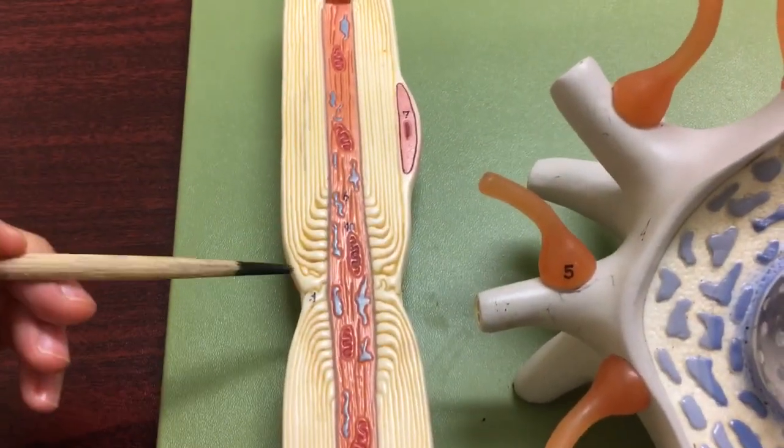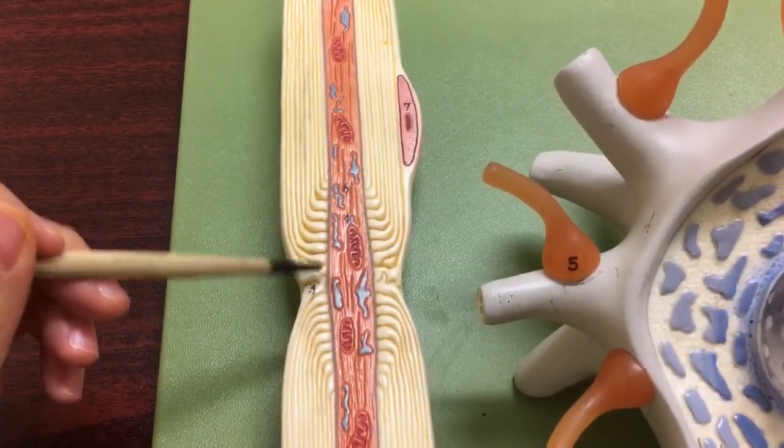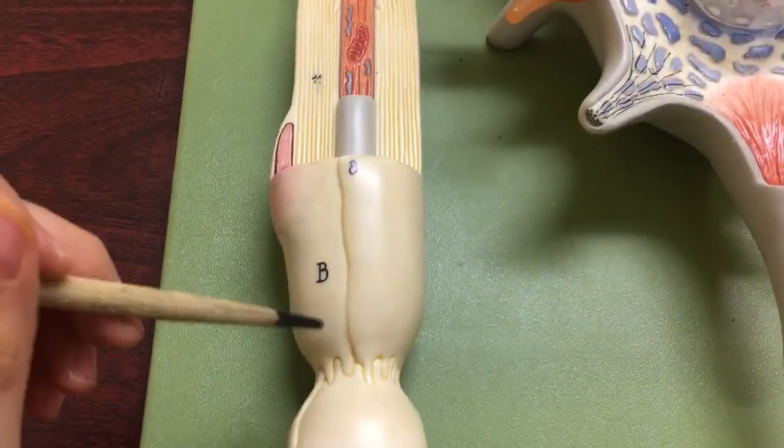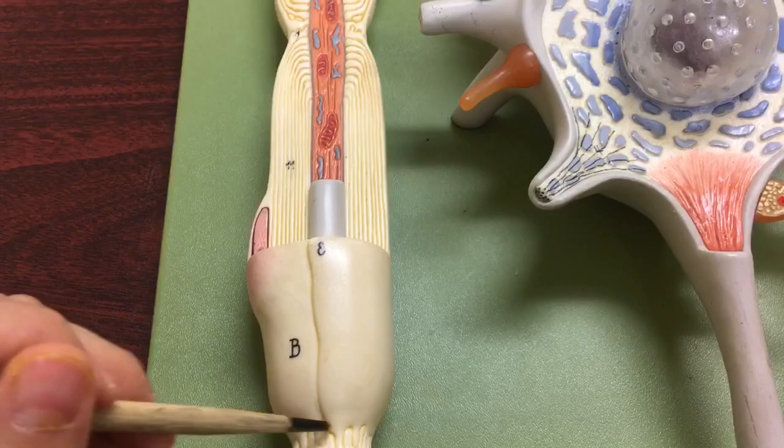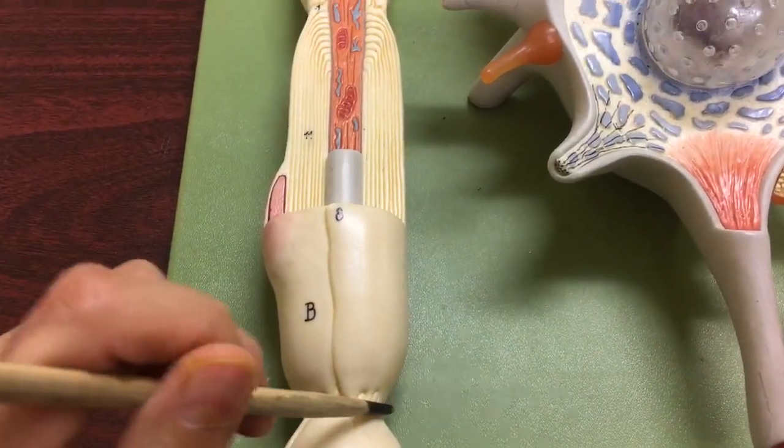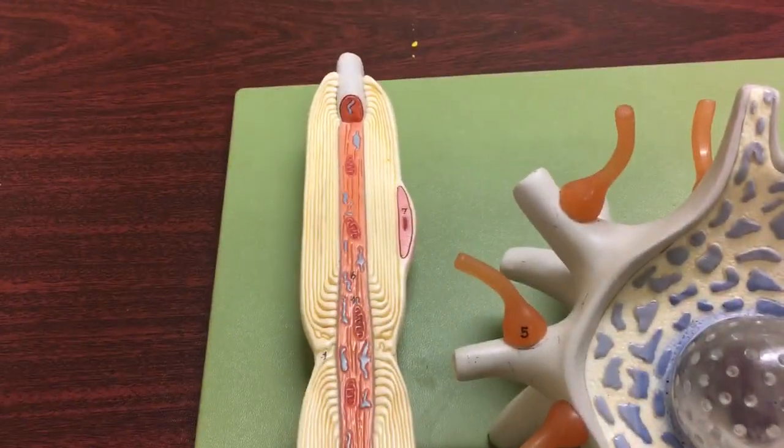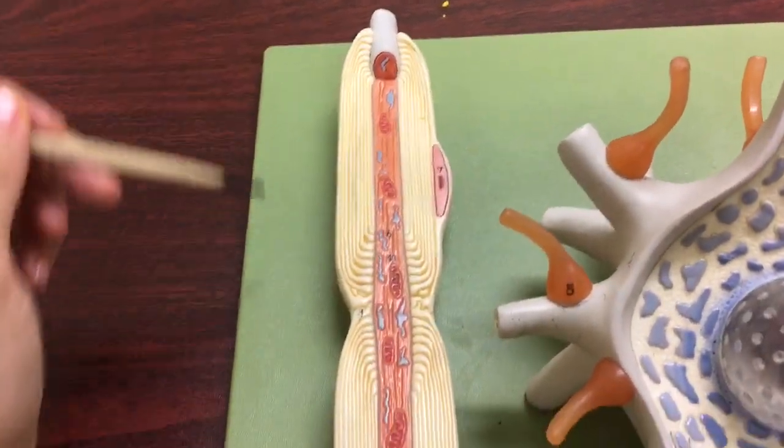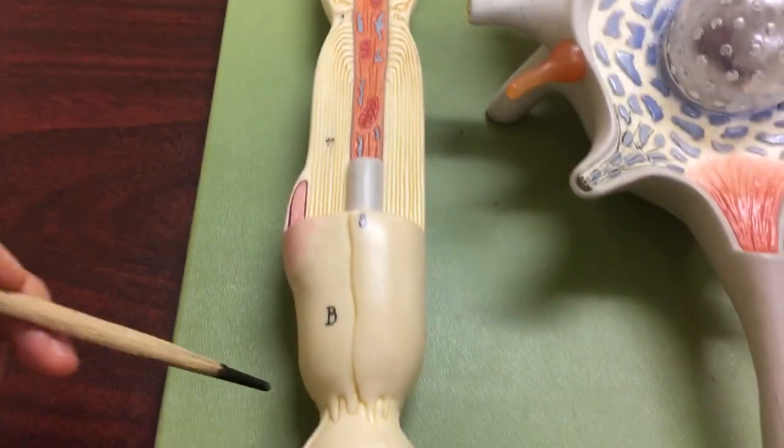Now in between these Schwann cells you can see a little bit of space. This is called the node of Ranvier. So when action potential is traveling, it will jump from one node to another and to another.